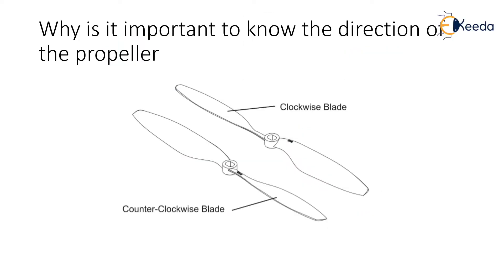Props are designed to produce maximum thrust when turning in only a single direction. Quadcopters are equipped with two sets of two different props. One set of clockwise, which rotates like a clock, and another set of counterclockwise. Normally, when you buy props for quadcopters, you receive a full set of two clockwise and two counterclockwise props.